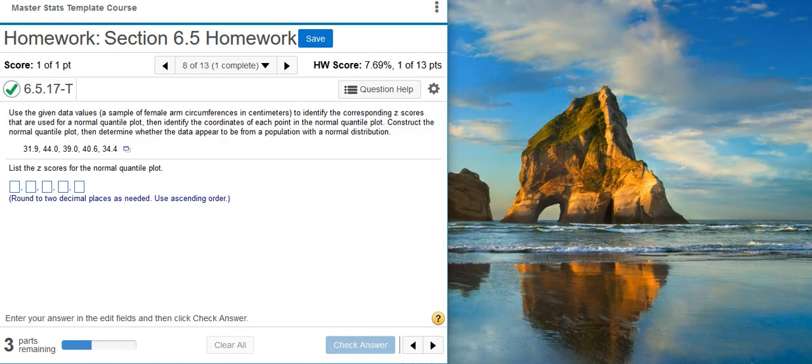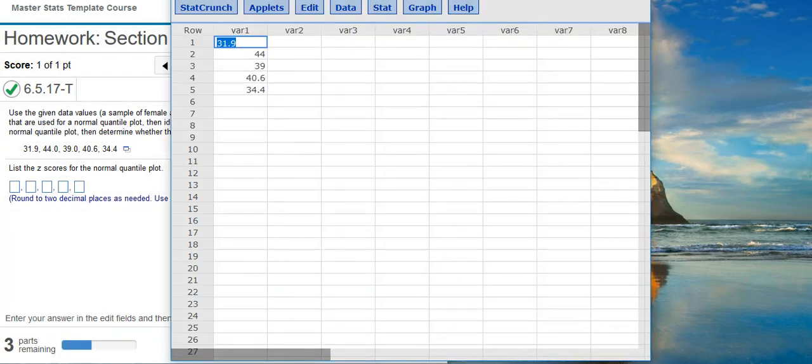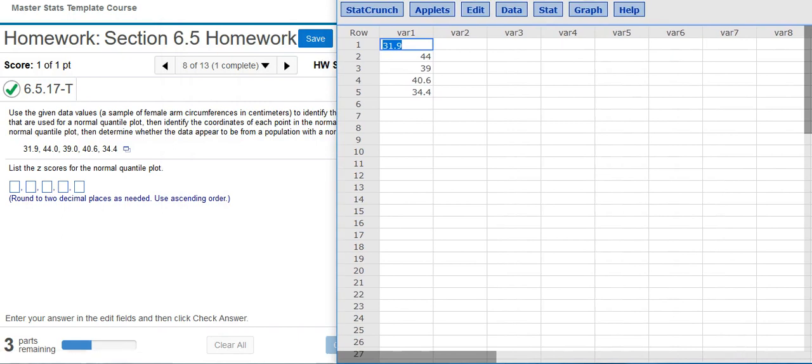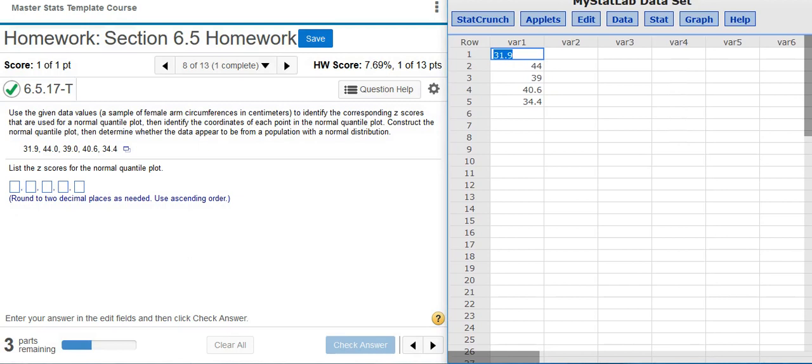This is most easily done by constructing the normal quantile plot in StatCrunch. So I'm going to take my data here, click on this icon to the right, and select open in StatCrunch. Now that my data is open here in StatCrunch, I'm going to construct my normal quantile plot.